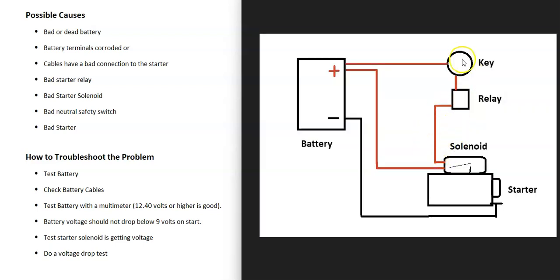And the starter solenoid is enabled when the key goes into position. It'll usually go to a relay and then sometimes it'll go to a safety neutral switch and things like this. And it'll send power to that starter solenoid and then send power to that starter, which will turn the engine.